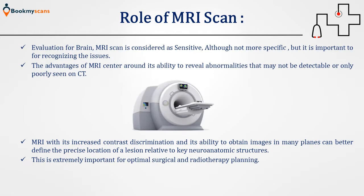Since magnetic resonance imaging is a newer imaging modality, a major question is what is the role of MRI in relation to older, more traditional diagnostic techniques? MRI scan is considered sensitive, and while not the most specific, it is important for recognising issues. The advantages of MRI centre around its ability to reveal abnormalities not detectable or only poorly seen on CT scan. With its increased contrast discrimination and ability to obtain images in many planes, MRI can better define the precise location of a lesion relative to key neuroanatomic structures, which is extremely important for optimal surgery and radiotherapy planning.